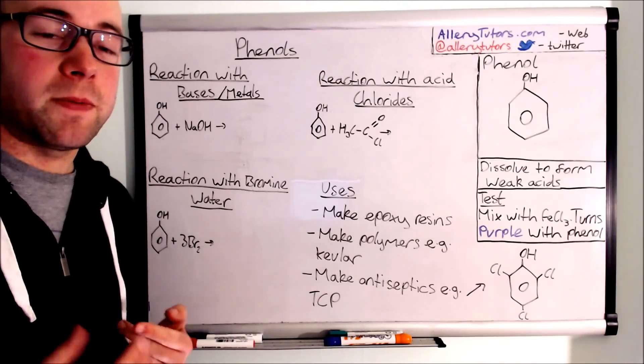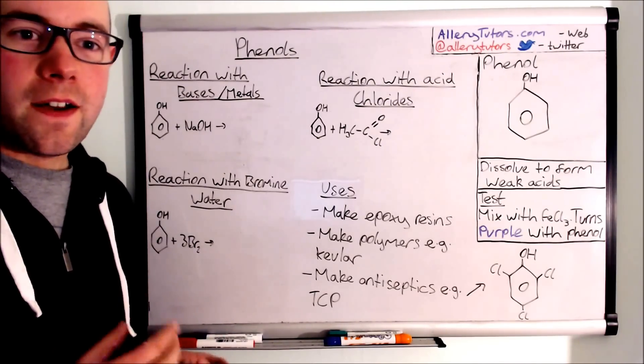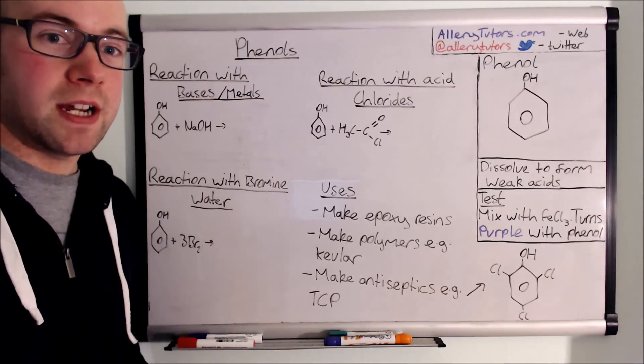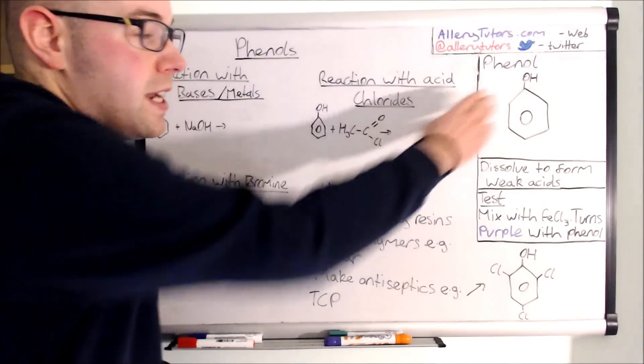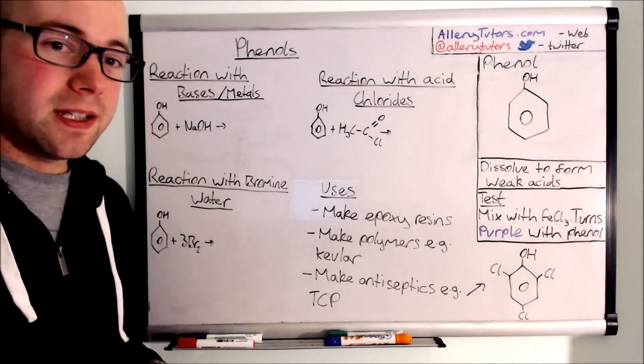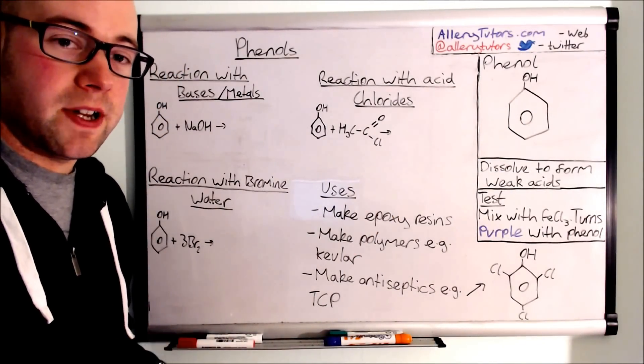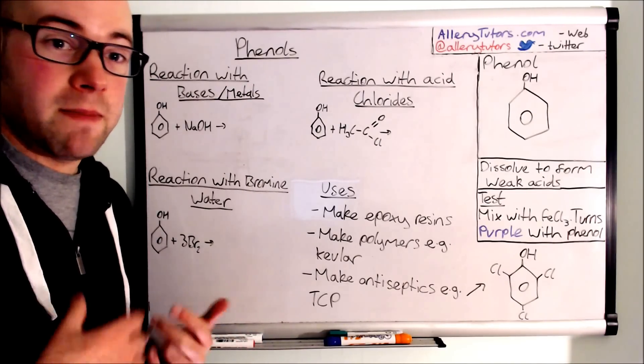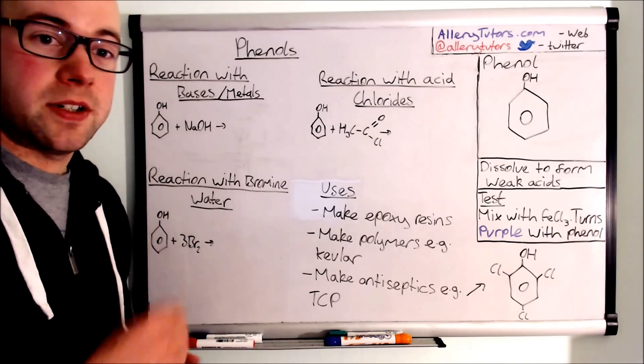We're going to start by looking at what a phenol is. A phenol belongs to the aromatic group of chemicals so that means it has a benzene ring in it. Here's the benzene ring and a phenol has just an OH on the top. This is a bog standard basic phenol. We can add things to this to make different types of phenols as well.